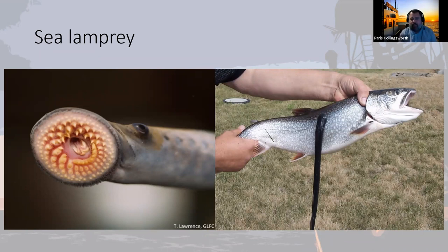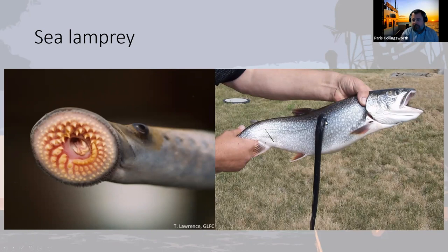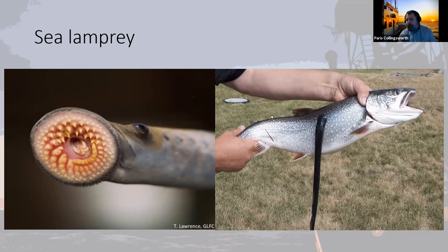Sea lamprey is an invasive fish native to the Atlantic Ocean. They came through the canal and are essentially parasites. This is what the mouth of a sea lamprey looks like — hooks and teeth on their tongue that rip a hole into the side of a fish, sucking blood and fluids until the fish dies or they move on. A combination of sea lamprey predation and fishing pressure basically wiped out the lake trout population in the Great Lakes, especially the upper Great Lakes.